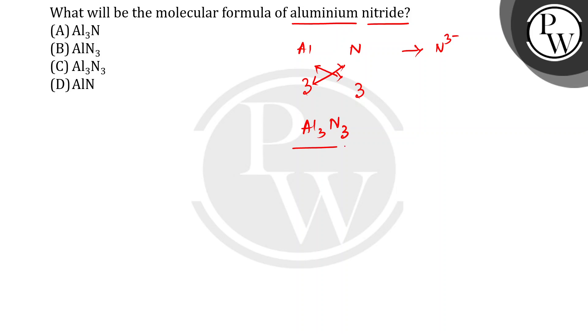Lekin Al3N3 ko hum traditional method me nahi likhta hai, is tarike se nahi likha jata hai. Agar aisa hota hai, to aap isko simplest jo form hai, wahan leke aao, iska reason kya hai? Iska reason ye hai,